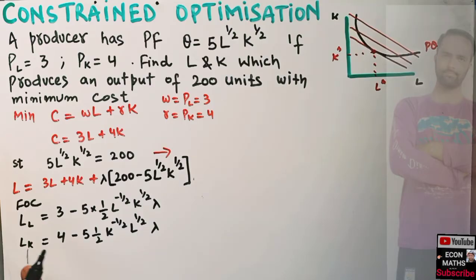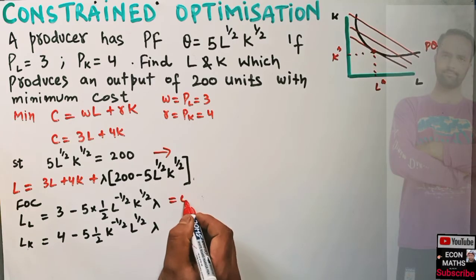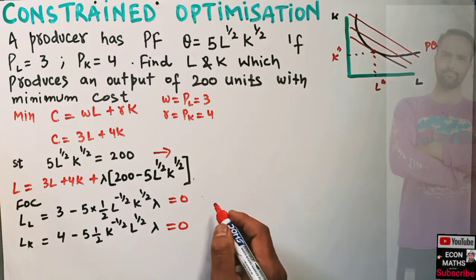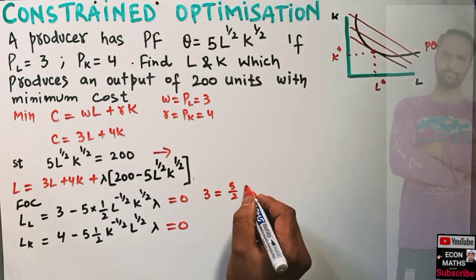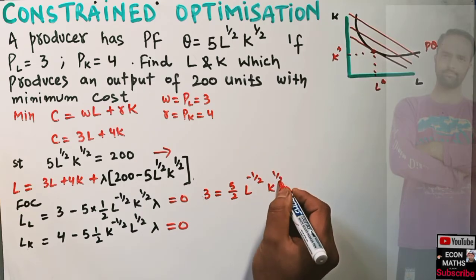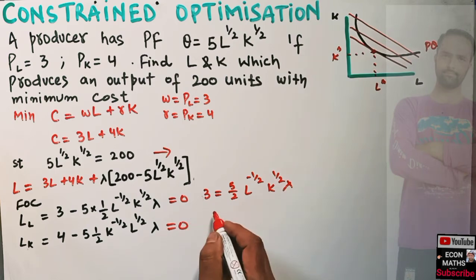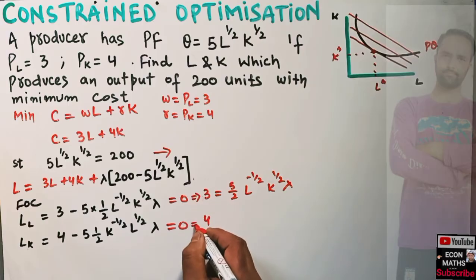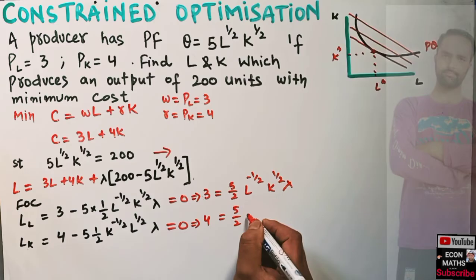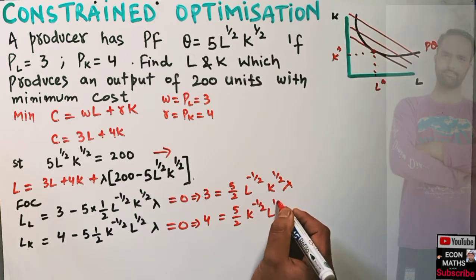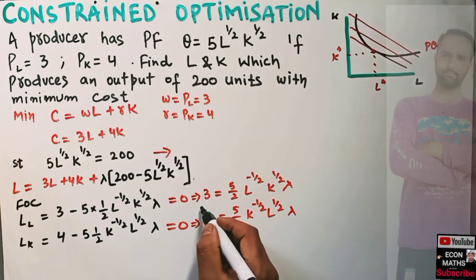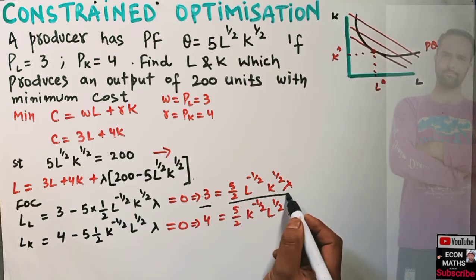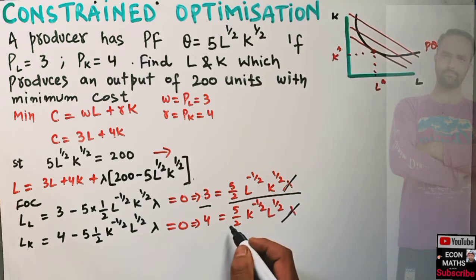We solve these two equations by setting each equal to zero. Transposing, the first equation gives: 3 = λ × (5/2) × L^(−1/2) × K^(1/2), and the second gives: 4 = λ × (5/2) × K^(−1/2) × L^(1/2). Now we divide these two equations — dividing LHS by LHS and RHS by RHS — lambda cancels and 5/2 cancels.